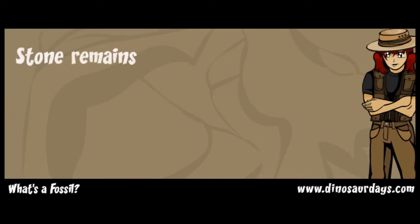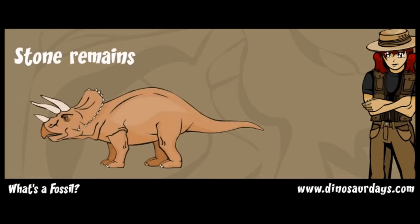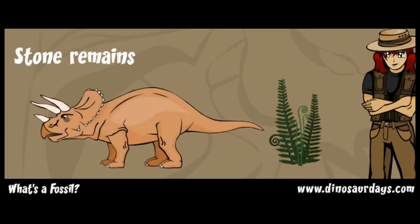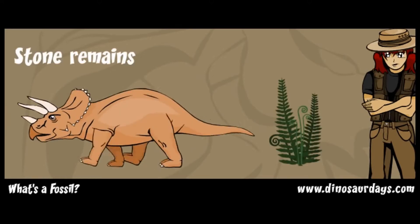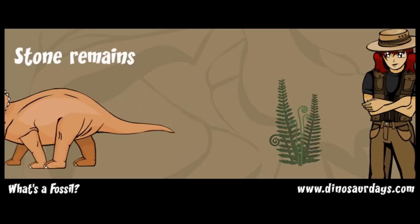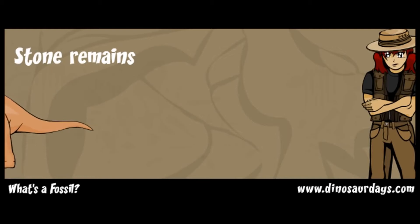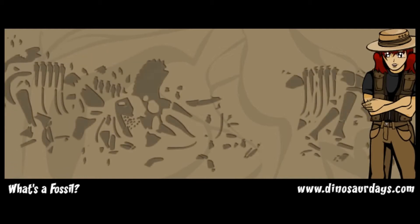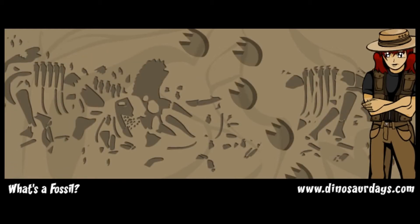Fossils are the stone remains of animals or plants that were once alive. Fossils can be the bones of a dead dinosaur or his big footprints in the sand.